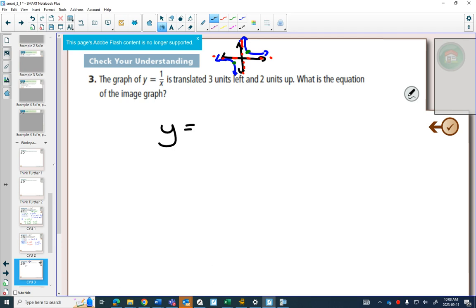Again, we know left and right happens inside the function. Inside the function here is where the x was. So I'm going to put brackets on the bottom. You wouldn't need these brackets, but I'm just going to put brackets to say that's where the x was. Because now what do I have? Three to the left, I would have an x plus three instead of the x.